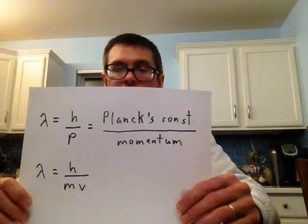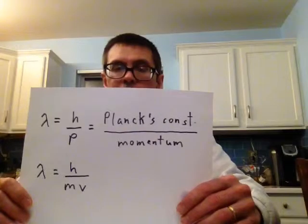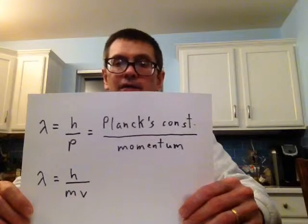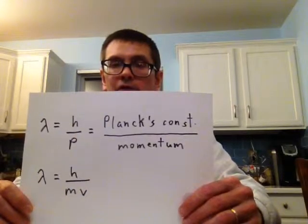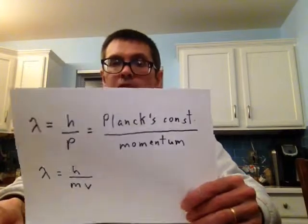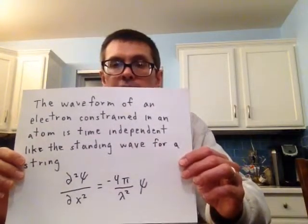is Planck's constant divided by the momentum, where p is the momentum, or simply lambda equals h/mv. Yeah, a photon can have momentum but it has no mass, but if you happen to be an electron you have mass and you can write mv as the momentum. That's what we're going to do—we're going to do an electron.